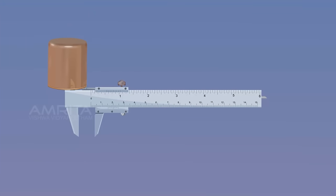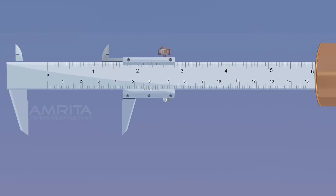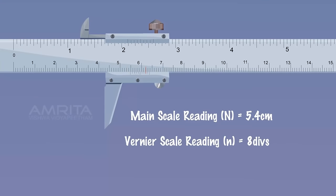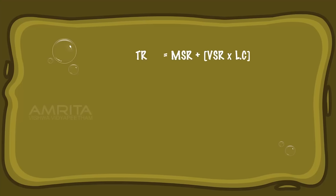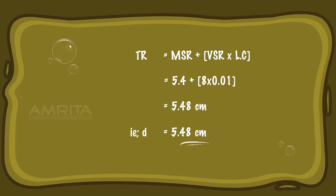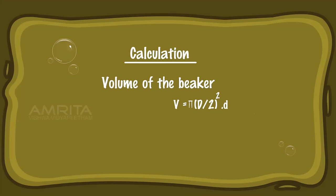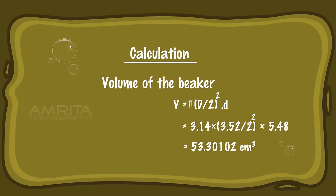Release the beaker from the jaws of the vernier calipers and place it at the end to extend the depth measuring prong through the beaker till it touches its bottom. Note the MSR and VSR readings. Calculation: TR = MSR + (VSR × least count) = 5.4 + (8 × 0.01) = 5.48 cm, so depth D = 5.48 cm. Volume of the beaker: V = π × (D/2)² × depth = 3.14 × (3.52/2)² × 5.48 = 53.30102 cm³.